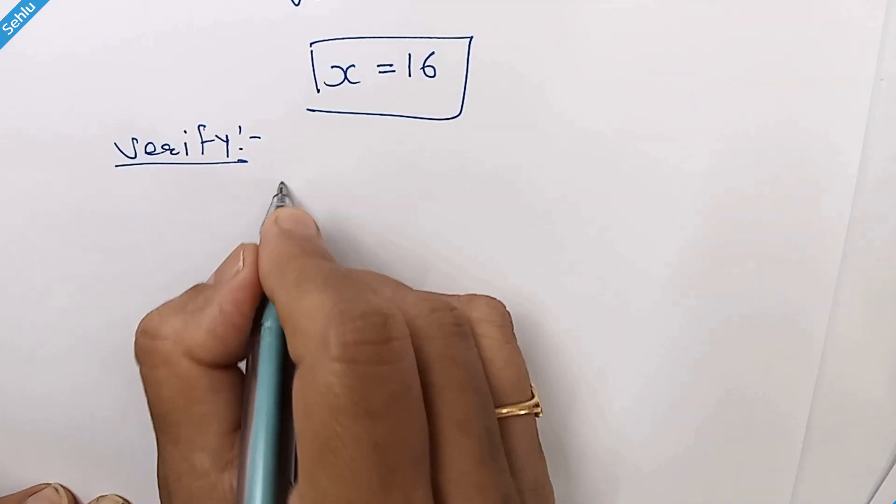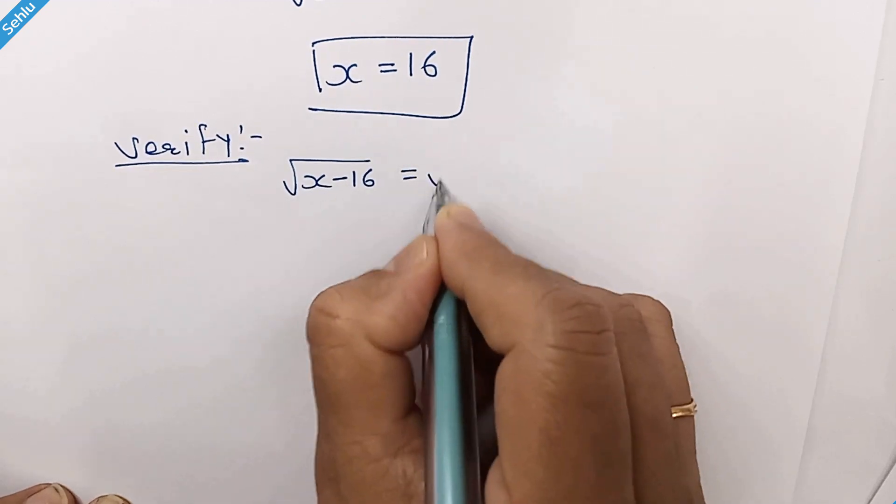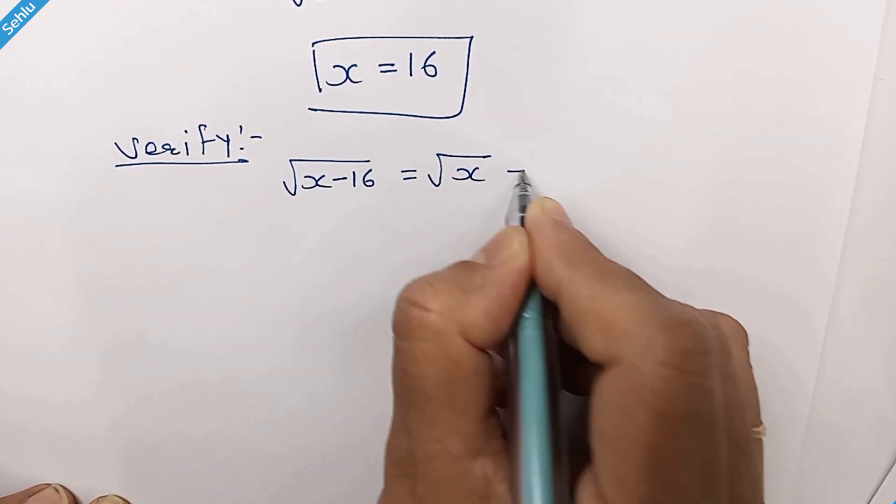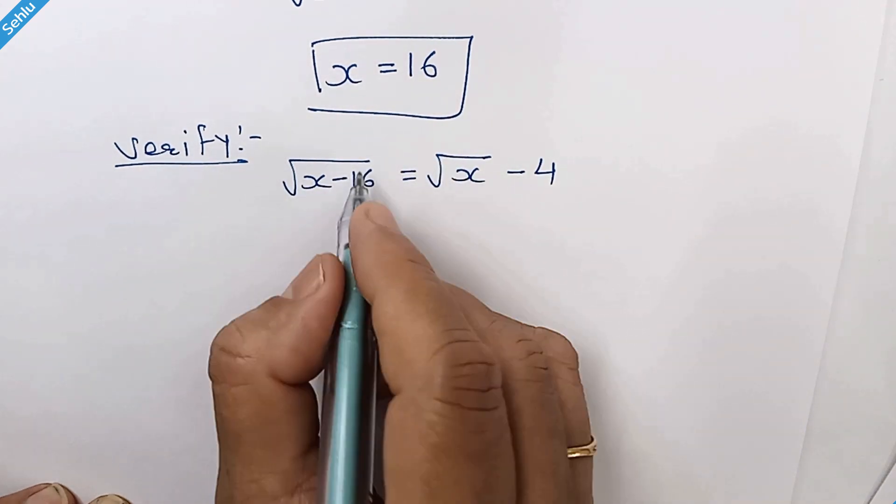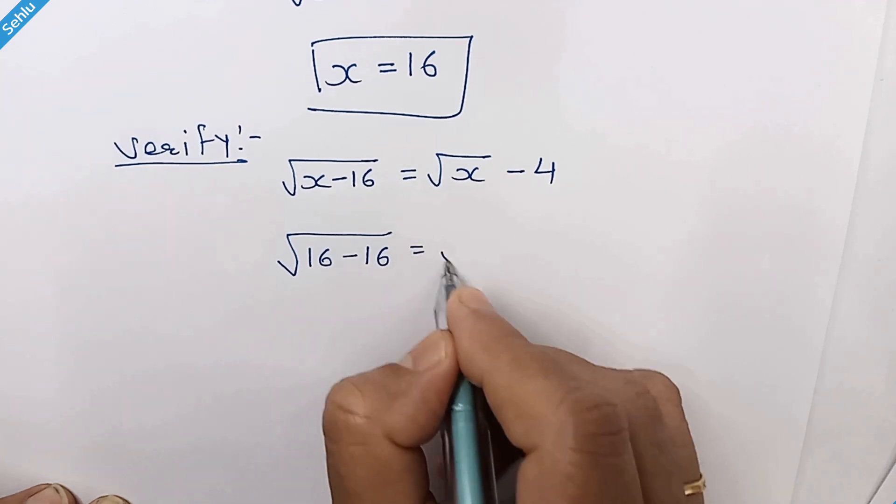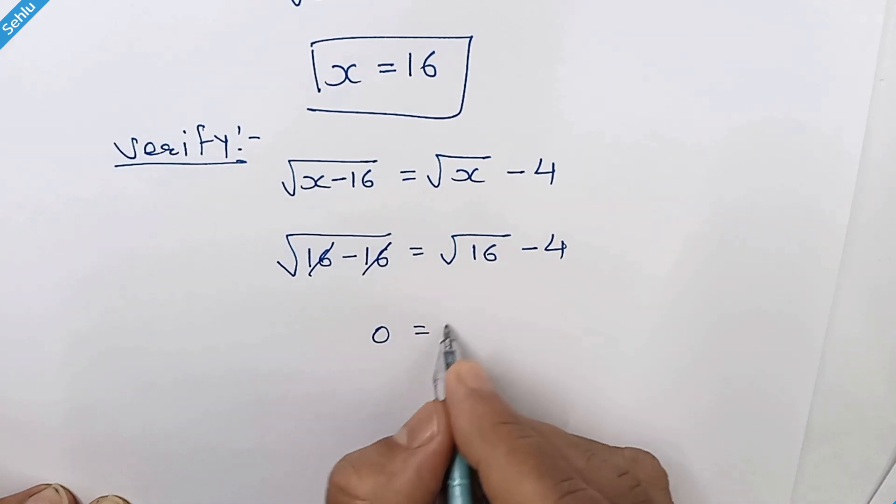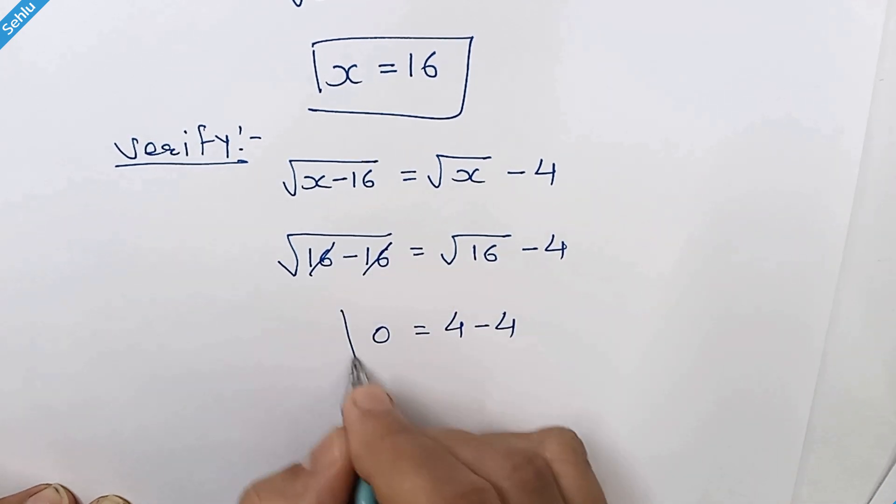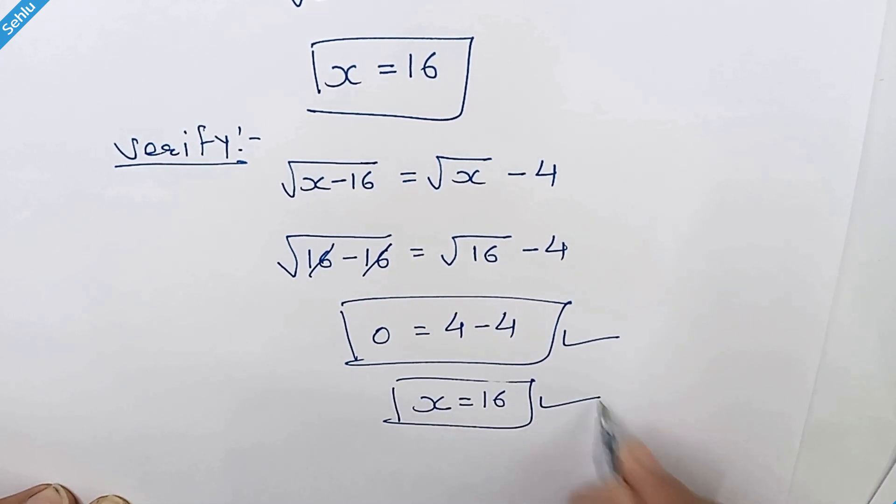Our question is... putting x is equal to 16... here we have 0 is equal to square root 16 is 4. So x is equal to 16 is verified.